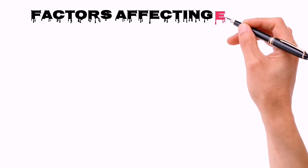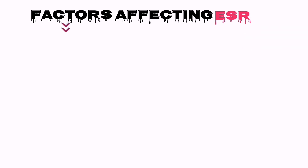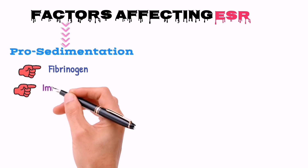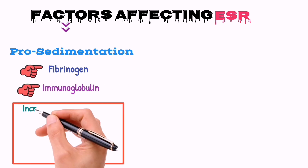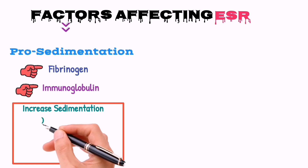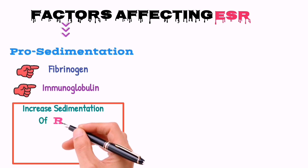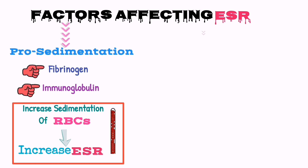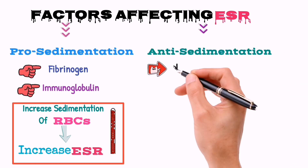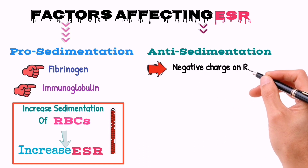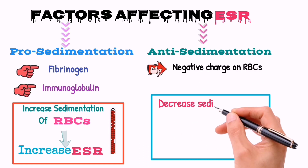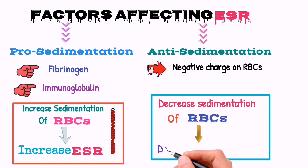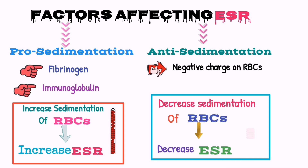What can be the factors that can affect ESR? These include pro-sedimentation factors, i.e. fibrinogen and immunoglobulin. These pro-sedimentation factors increase the sedimentation of the red blood cells which lead to increased ESR value. The second factor is the anti-sedimentation factor. These include negative charge on the RBC surface, which leads to decreased sedimentation of the red blood cell, ultimately decreasing the ESR measurement.